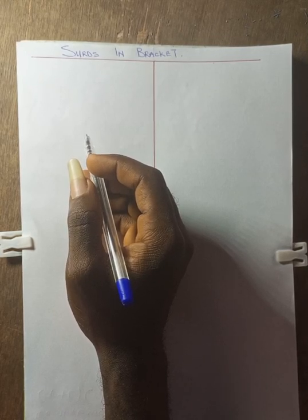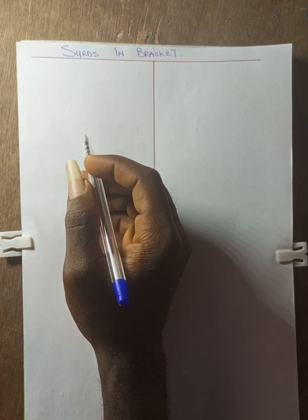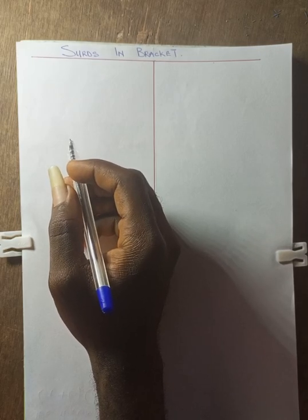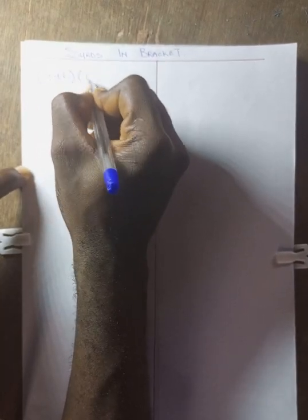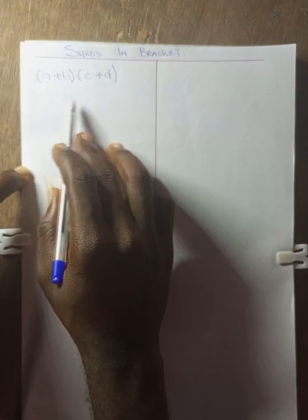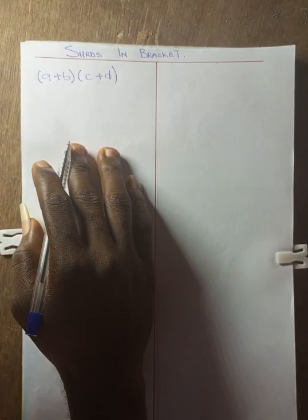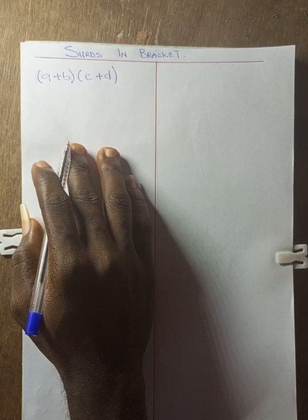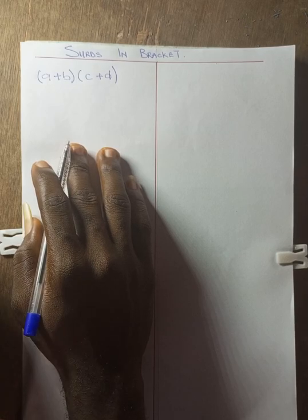Today we're going to look at surds in brackets. To solve surds in brackets, we need to use algebraic expansion. If you don't already understand expansion, scroll down and watch the previous video where we already explain expansion, so that you actually understand what expansion is before we use it to do these surds in brackets.